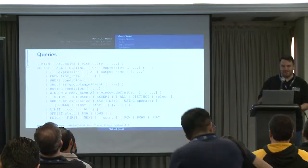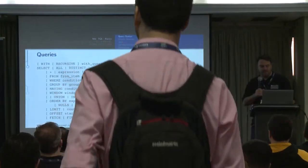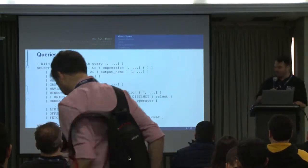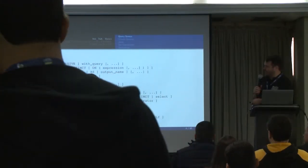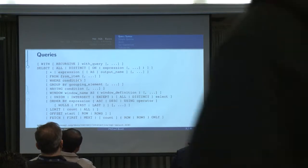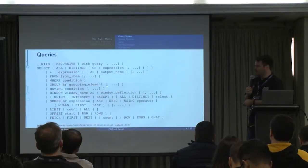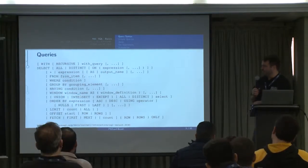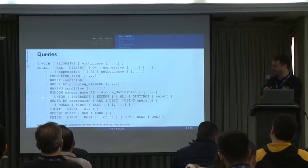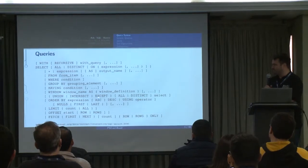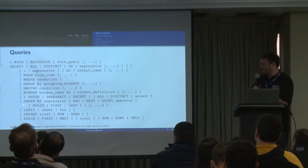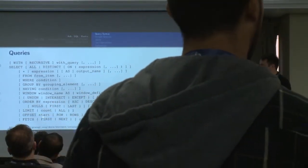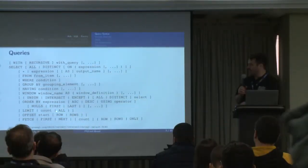What I always find interesting is that this is only half the story. This is only showing you select columns and expressions. You have a WHERE condition, which can be anything. What about grouping elements and HAVING conditions? Then we get into windowing, which we'll talk about quite a bit later. We also have an ORDER BY clause, and then offsets and fetches and all kinds of interesting things.